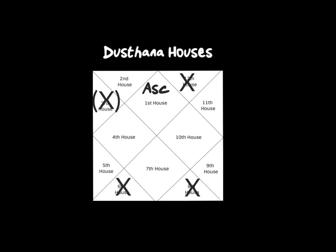Next we have the Dusthana Houses — these are a complete contrast. These are houses of suffering, challenges, and difficulty, because life is full of light and dark. They show the difficult karmas coming back through signs and planetary placements. The 3rd house is slightly Dusthana, but the 6th, 8th, and 12th are the major Dusthana Houses. In fact, the 8th and 12th are the most challenging of all. Don't think that having no planets in these houses means you won't have any suffering — the lord of the house will bring its effect too.